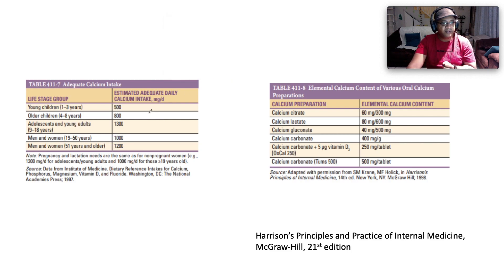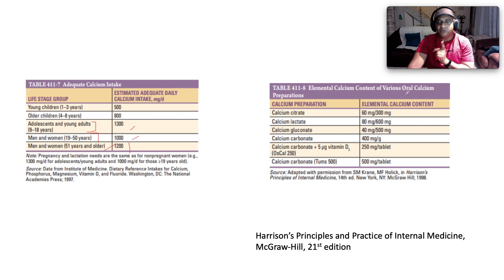Regarding adequate calcium intake: adolescents and young adults aged 9 to 18 need 1300 mg per day; men and women aged 19 to 50 need at least 1 gram per day, increasing to 1.2 grams per day for men and women 51 years and older. In terms of elemental calcium content: calcium citrate contains about 300 mg of elemental calcium per gram, and calcium carbonate about 400 mg per gram.